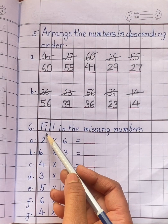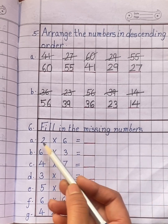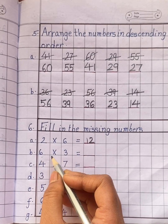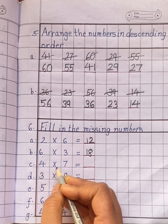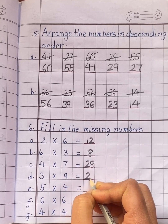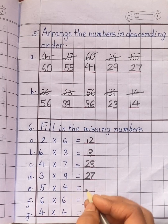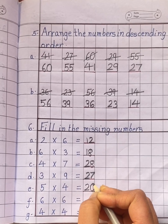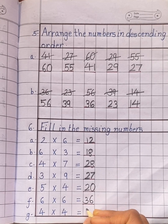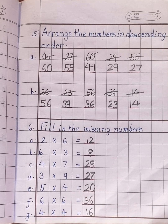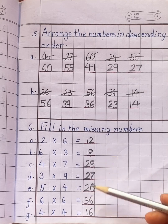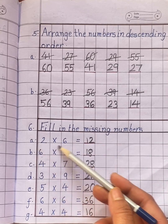Next question is fill in the missing numbers. 2 times 6 is 12. 6 times 3 is 18. 4 times 7 is 28. 3 times 9 is 27. 5 times 4 is 20. 6 times 6 is 36. 4 times 4 is 16. Children, you have to learn the tables nicely, otherwise you won't be able to do the questions.